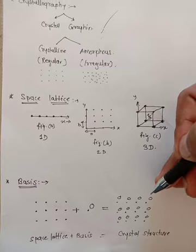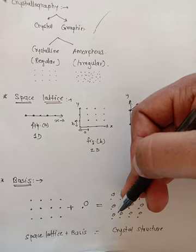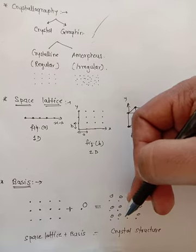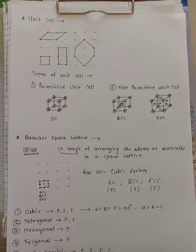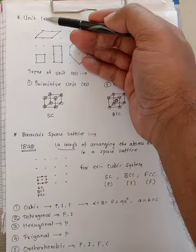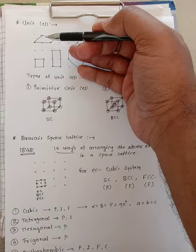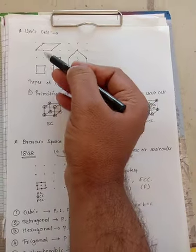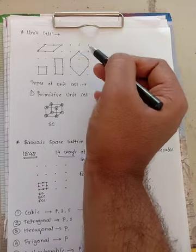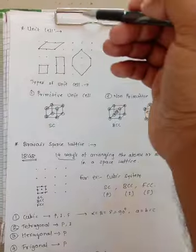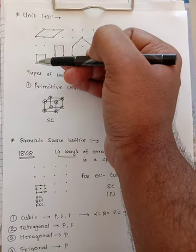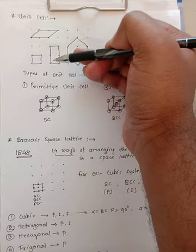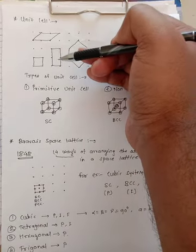The space lattice and basis together give the complete crystal structure. In this figure we see that an external atom or a group of atoms is attached with every lattice point in a space lattice, forming the basis. Now let us start the first point of our syllabus, which is the unit cell. The unit cell is the smallest geometrical block or figure in a space lattice. This is the simple cubic unit cell, this is the tetragonal, and this is the hexagonal.